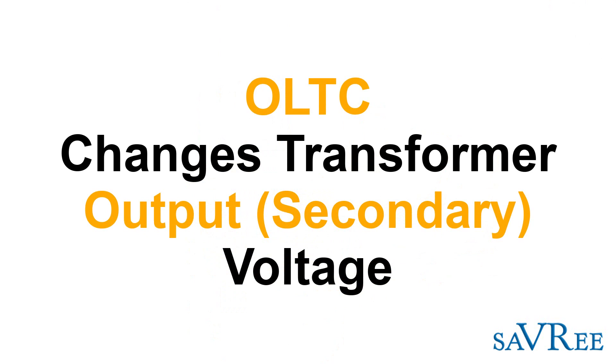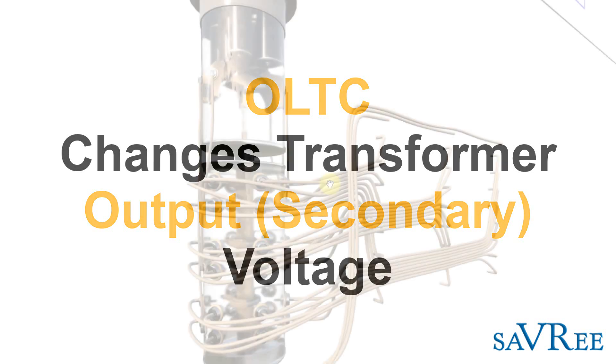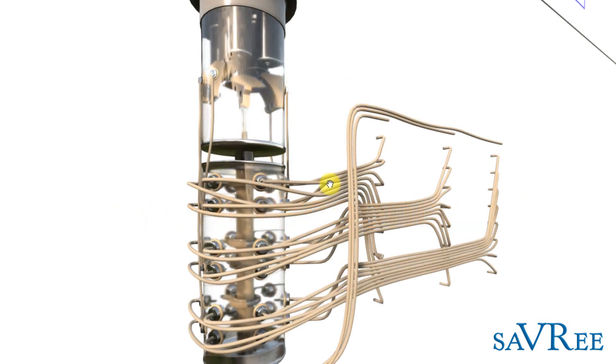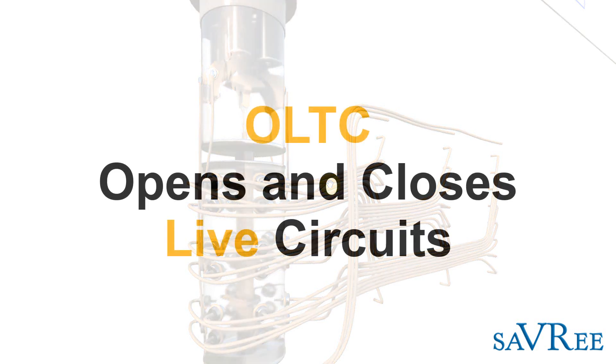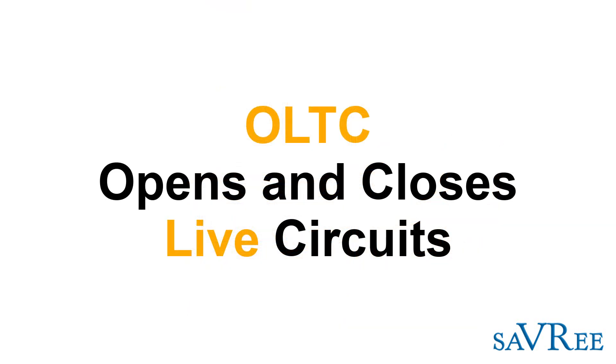That's all the tap changer's doing. Because the tap changer is an on-load tap changer, doing this is not particularly easy. Changing the number of turns on a secondary winding when you're operating at 110,000 volts or potentially more is actually quite difficult. So we need to be able to do this when the transformer is online, and that means we need to break and close the circuit without interrupting it or causing it to trip.